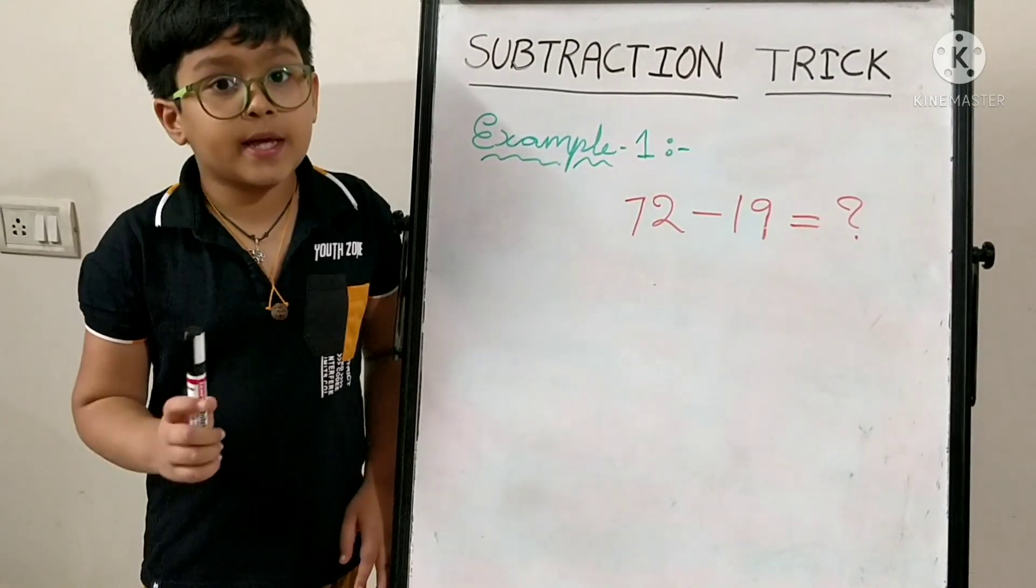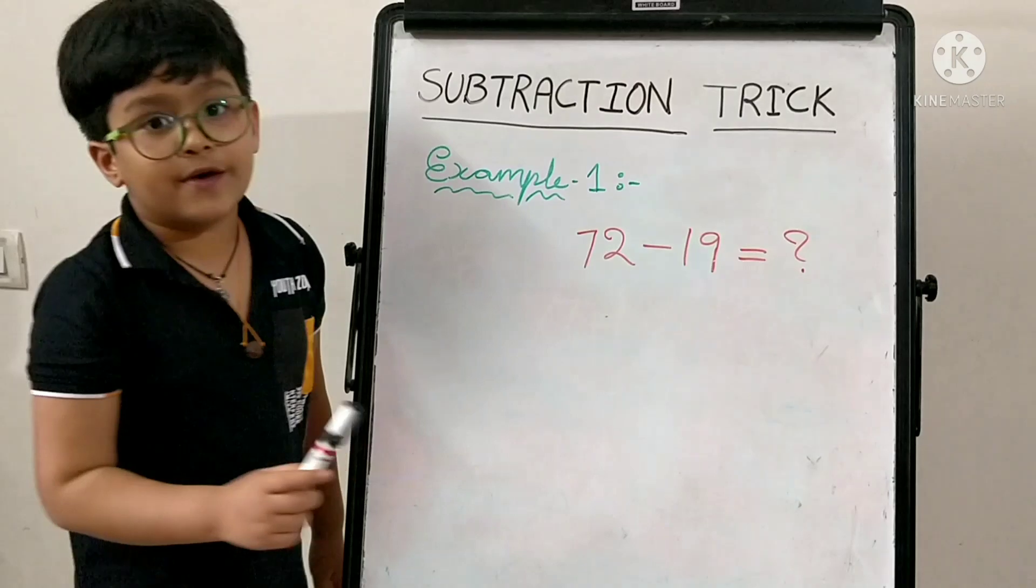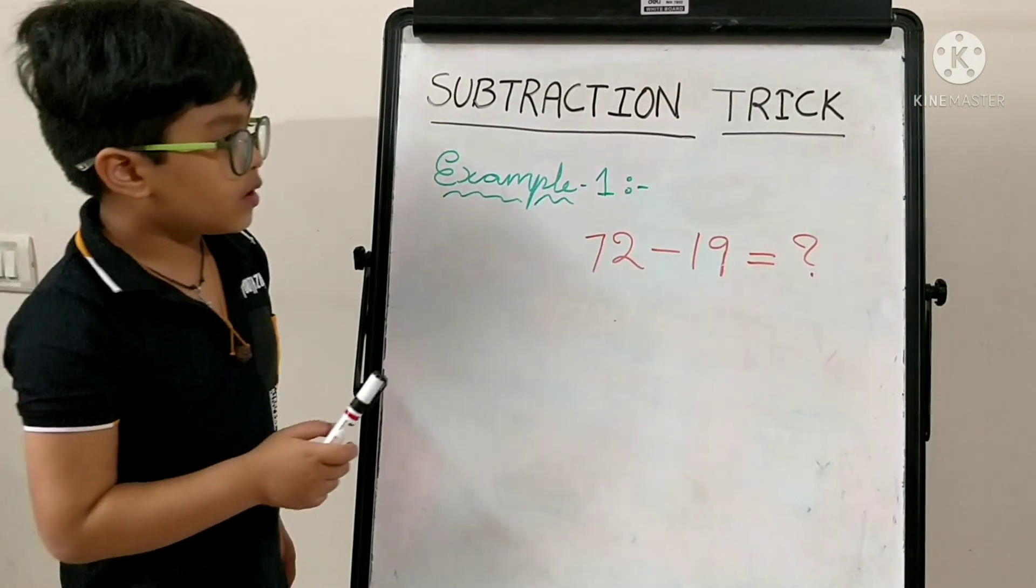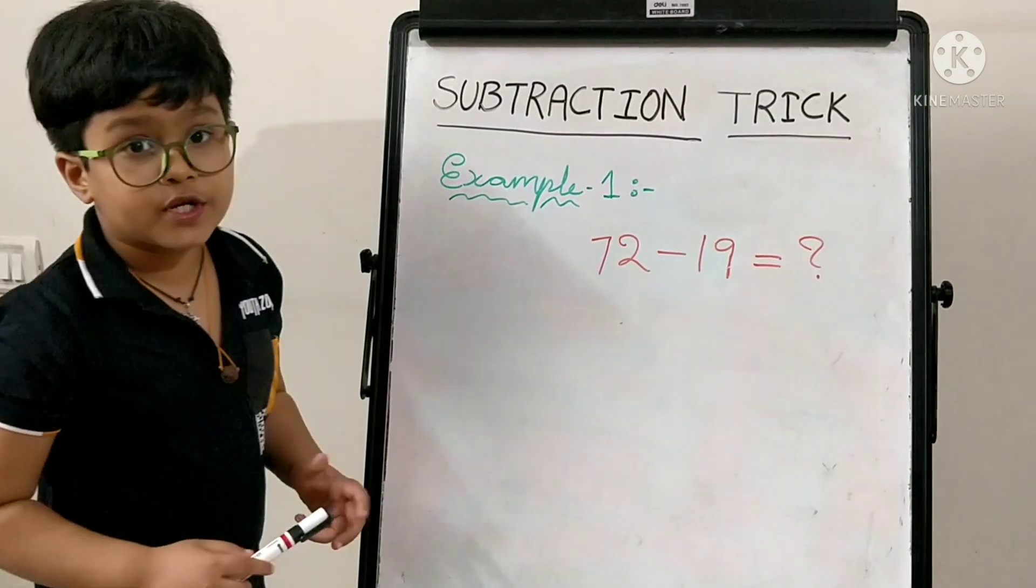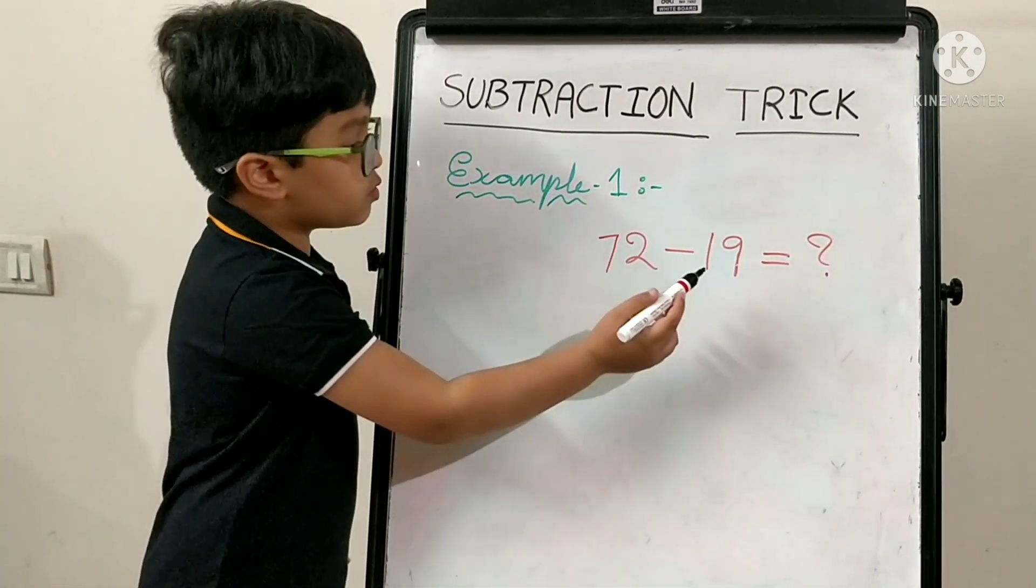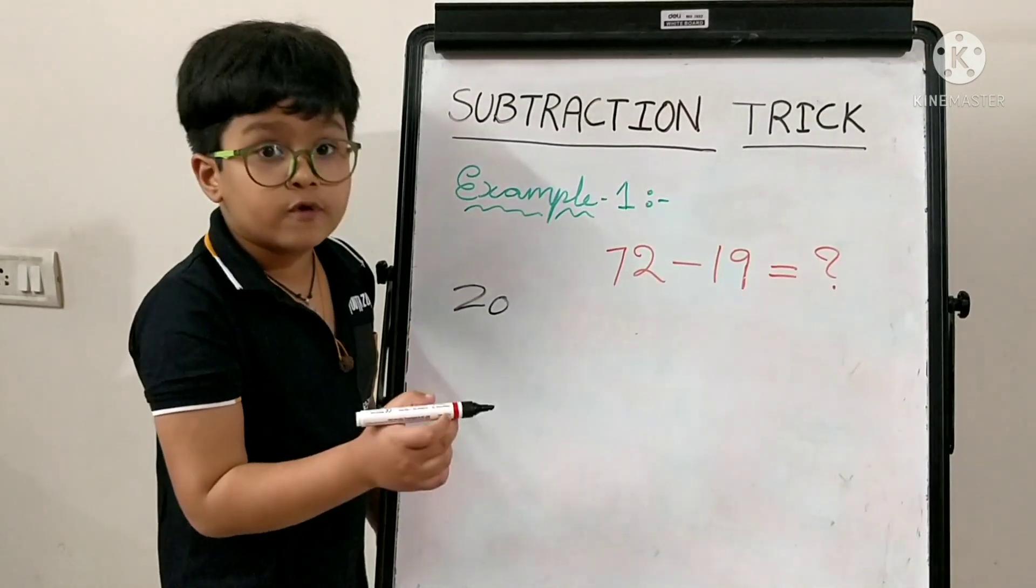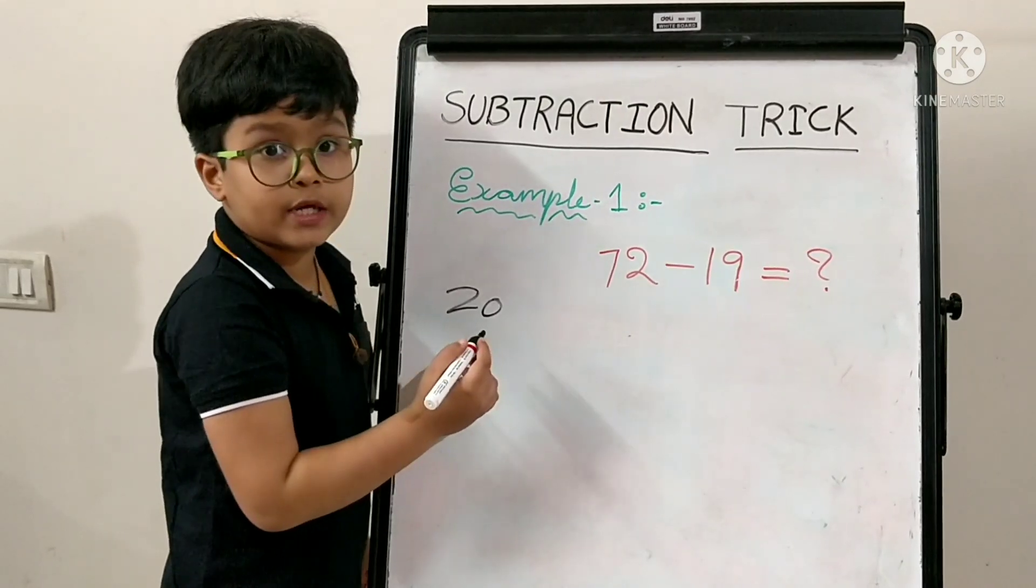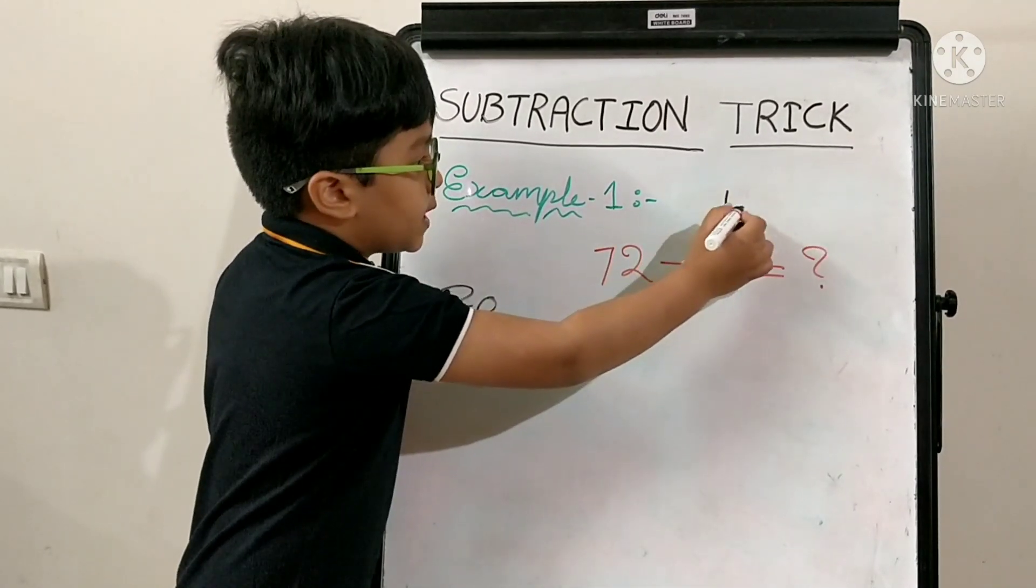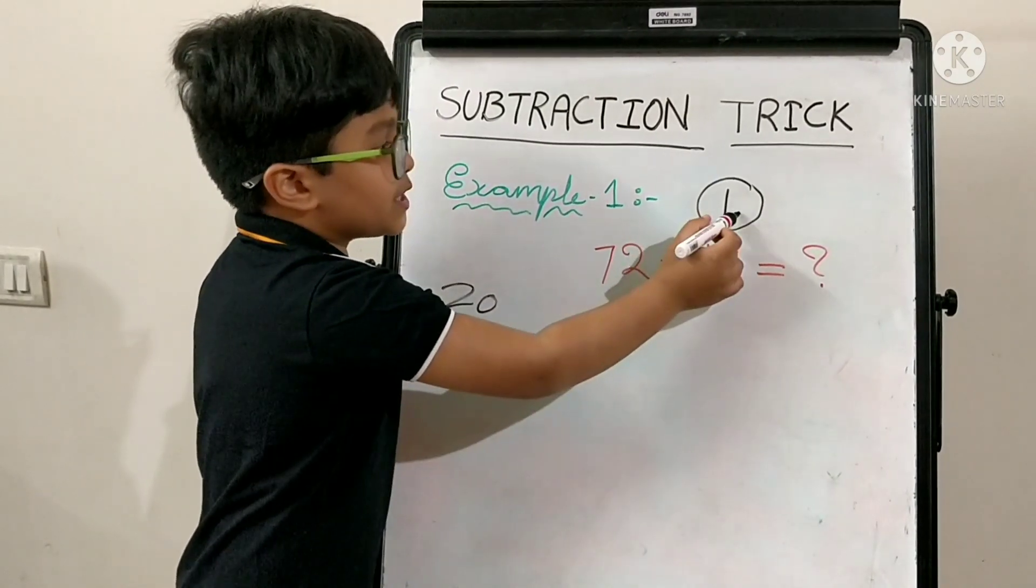I am taking an example as 72 minus 19. The first step is, you have to find the closest number to 19 in 10th table. The closest number to 19 in 10th table is 20. You have to check how much if you add to 19 will be 20. So, 19 plus 1 is equal to 20. Mark this number.